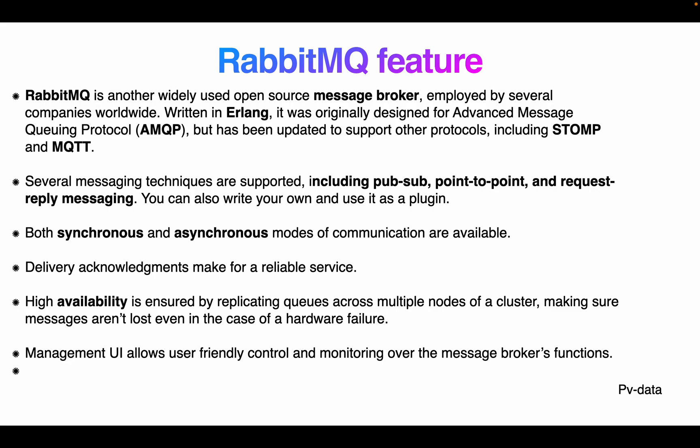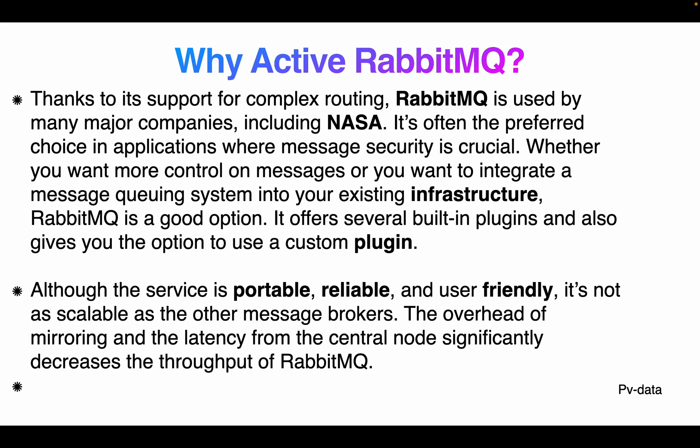Delivery acknowledgment makes RabbitMQ a reliable service — when a message is delivered, it sends an acknowledgment. It offers high availability by replicating queues across multiple nodes in a cluster, ensuring messages are not lost even in case of hardware failure. A management UI allows user-friendly control and monitoring over messaging broker functions.